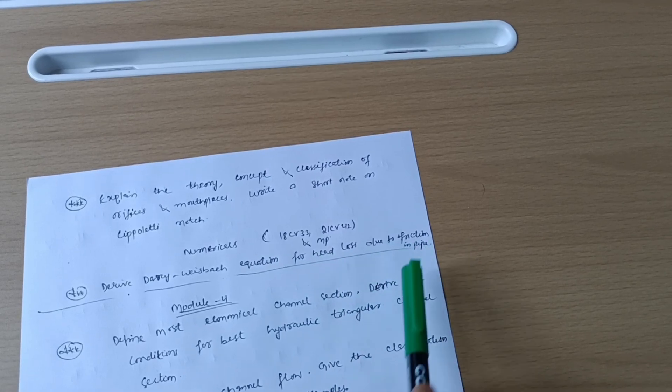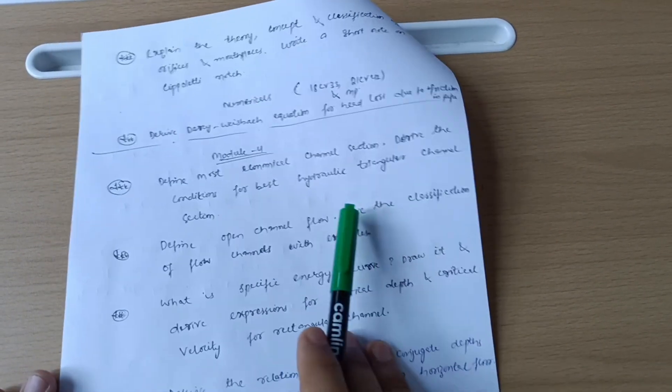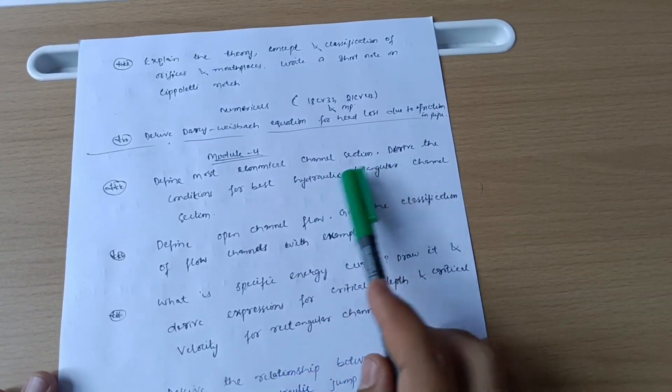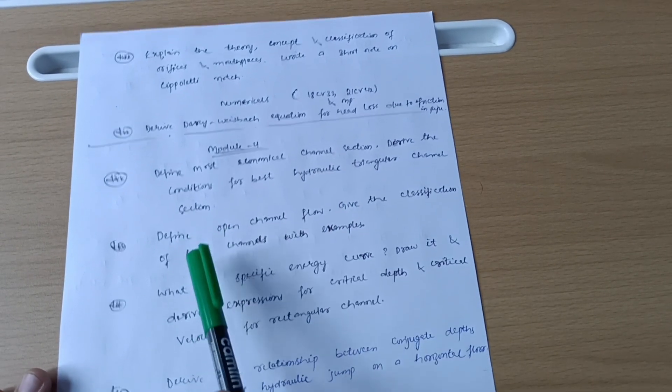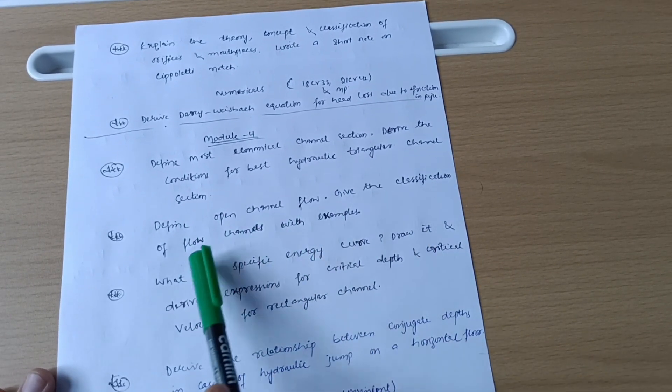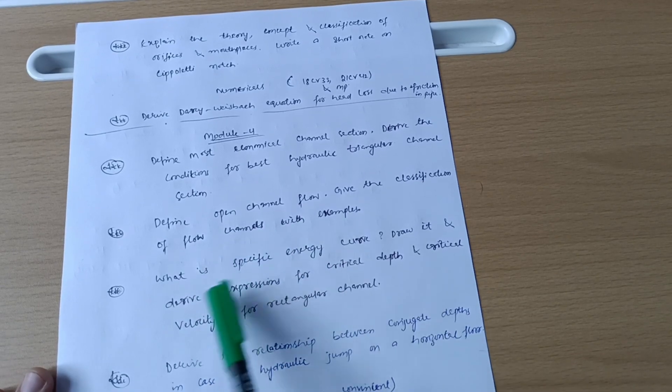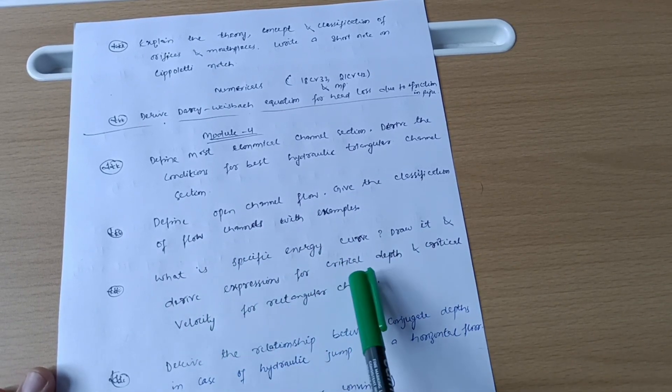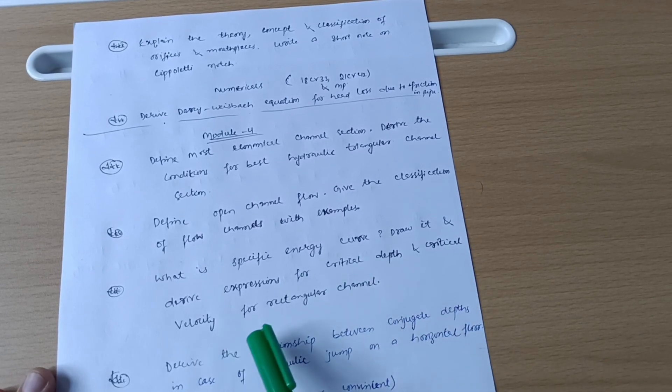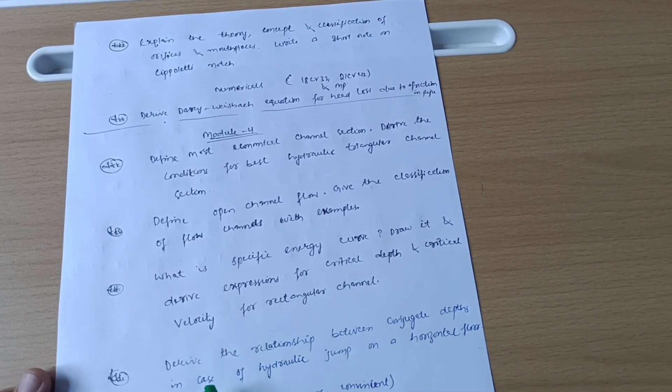Next is Model 4. Define most economical channel section and the conditions for best hydraulic triangular channel section. Define open channel flow, give the classification of flow channels with example. What is specific energy curve, draw it and derive expression for critical depth and critical velocity of a rectangular channel.